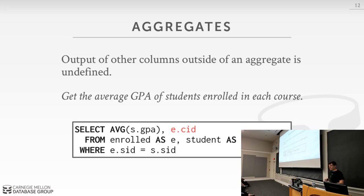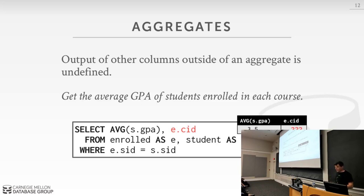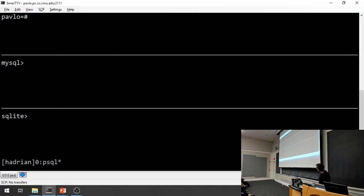Let's test this live. I have three terminals: top is Postgres, middle is MySQL, bottom is SQLite. Running the query in Postgres gives an error, saying course ID is not part of an aggregation. In MySQL it gives an answer — but is it correct? No, because it picked a random course ID. In SQLite it also gives an answer but picks a different course ID. MySQL in strict mode throws the same error as Postgres.